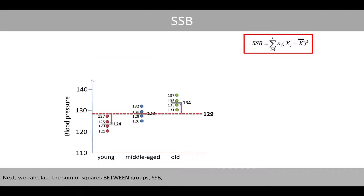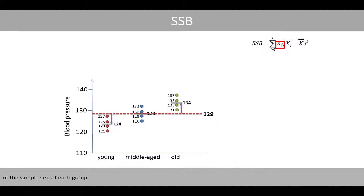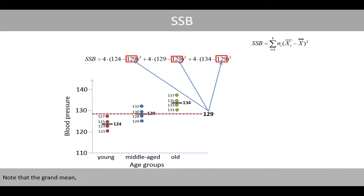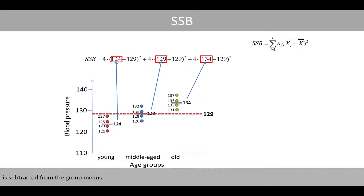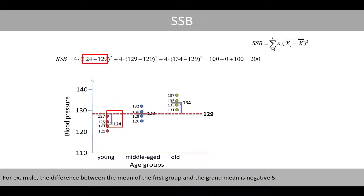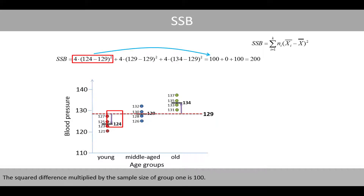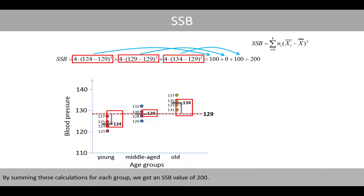Next, we calculate the sum of squares between groups, SSB, which is the sum of the sample size of each group multiplied by the square difference between the corresponding group mean and the grand mean. Note that the grand mean is subtracted from the group means. For example, the difference between the mean of the first group and the grand mean is negative 5. The square of negative 5 is 25, and multiplied by the sample size of group 1 gives 100. By summing these calculations for each group, we get an SSB value of 200.